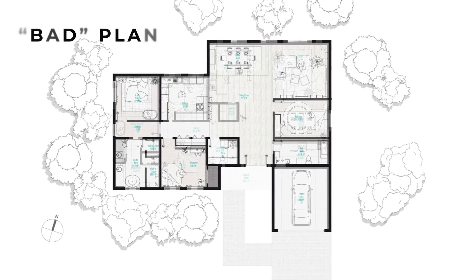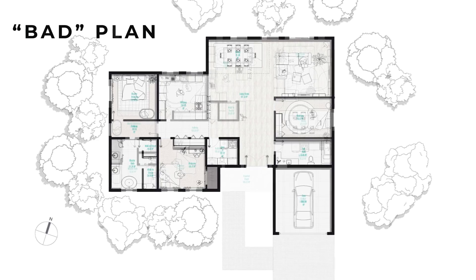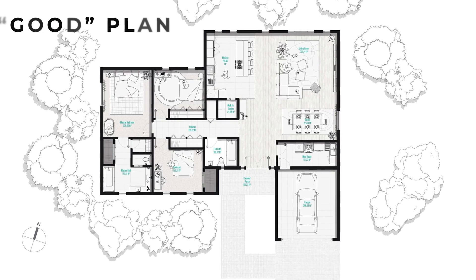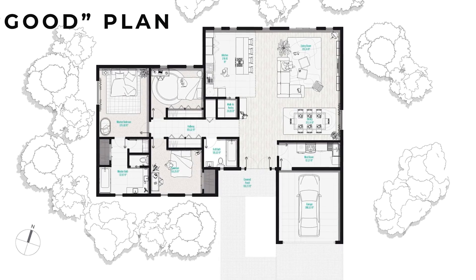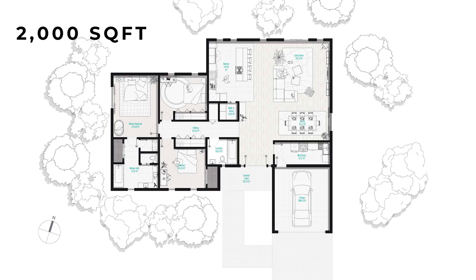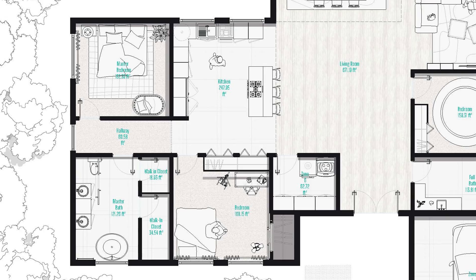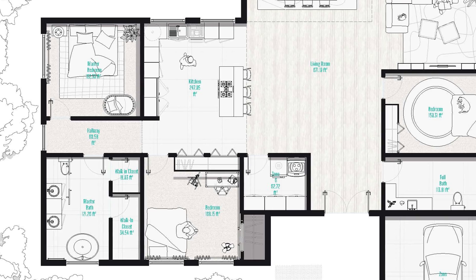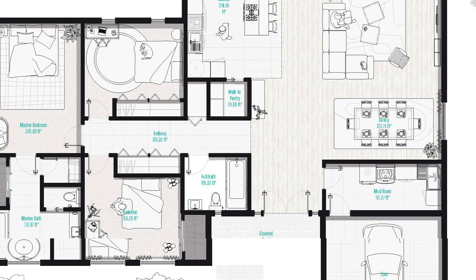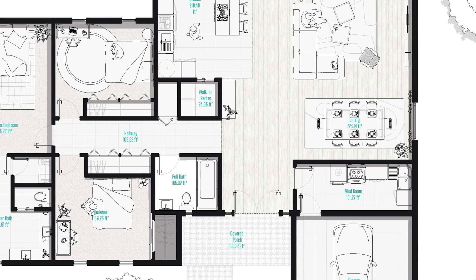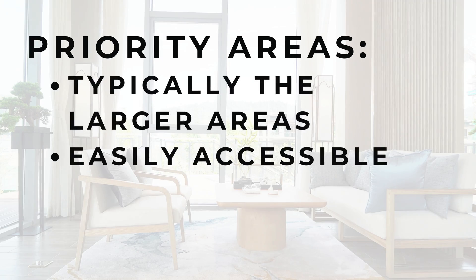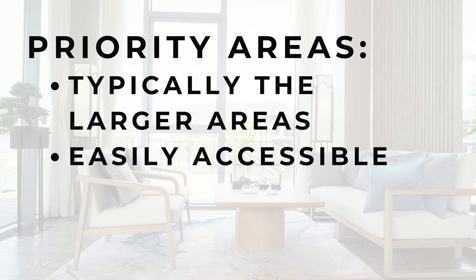You'll notice in today's video that I will be referencing these two floor plans a lot. Both of these floor plans were drawn in Rayon. Both have the same square footage, which is about 2,000 square feet — single family home, residential design. Priority areas receive the most attention in size, location, and accessibility, with secondary spaces arranged around them.